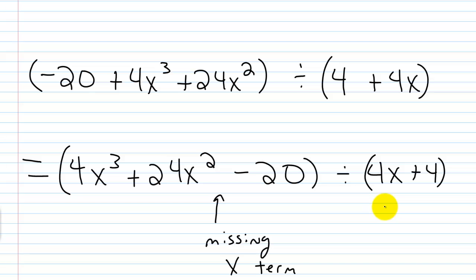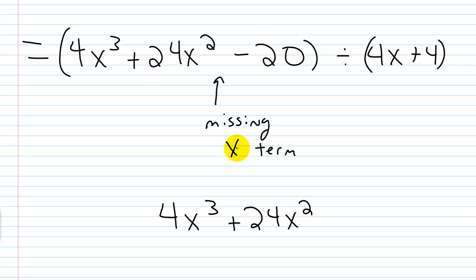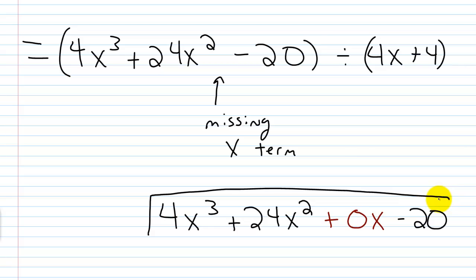So I'm missing my x term. When I set up my long division, I'm going to change the way this looks without changing the value. I'm going to put 4x cubed plus 24x squared, and where I'm missing my x term, I'm going to put plus 0x. What is 0 times x? It's 0, so I haven't changed the value of this polynomial — I've just changed the way it looks. Then I continue with minus 20. This goes underneath my division bar, and 4x plus 4 goes out on the side, just like always. When terms are missing, you use 0 as the coefficient for each missing term.